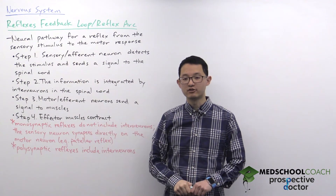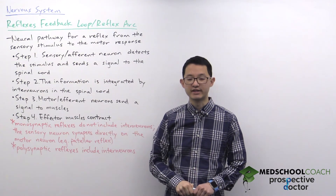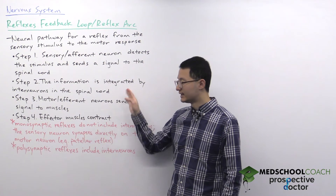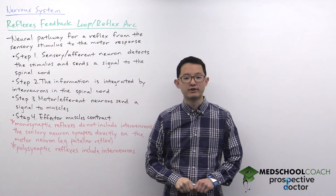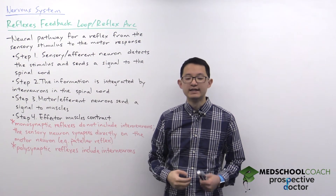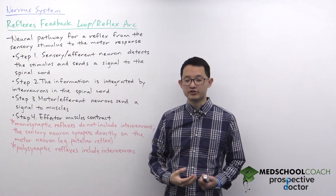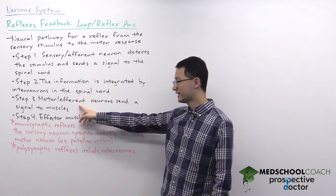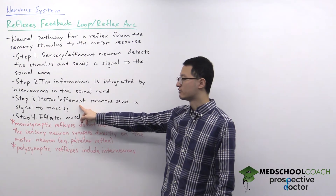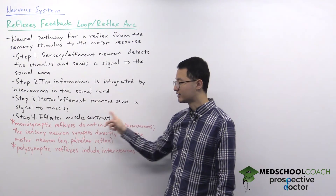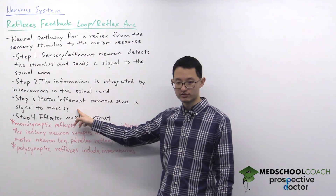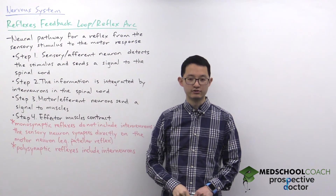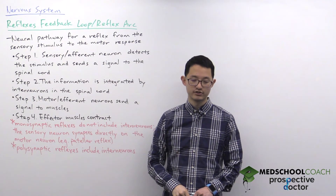In the spinal cord, this information is integrated by an interneuron. The interneuron will then send a signal to a motor neuron. The motor or efferent neuron will then send a signal to the muscles, which will then contract to produce the response.